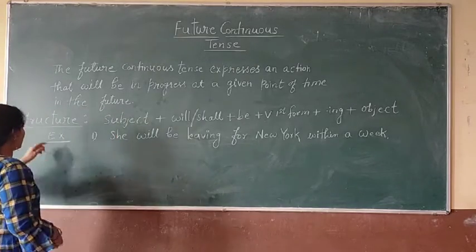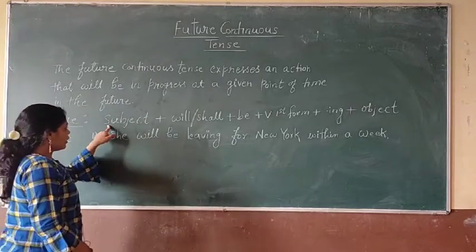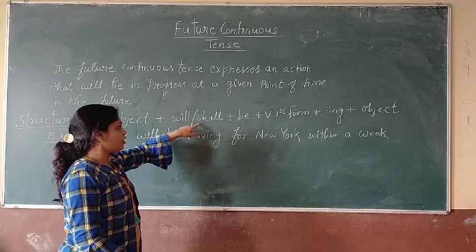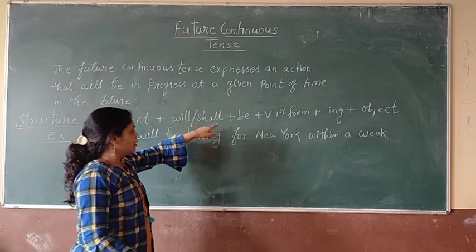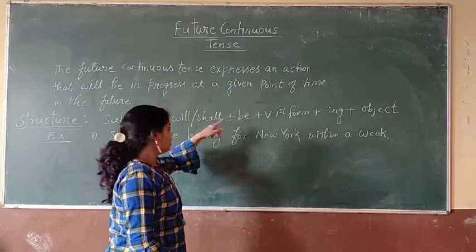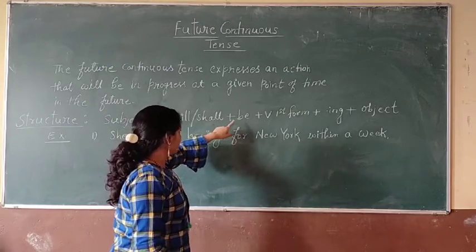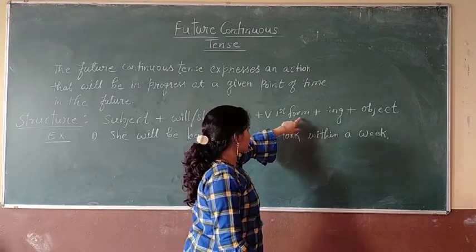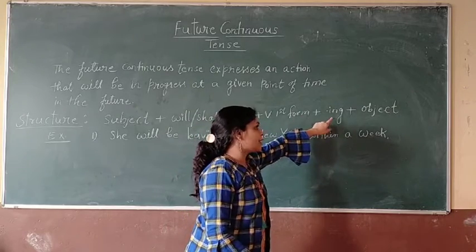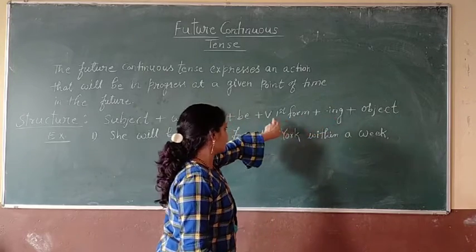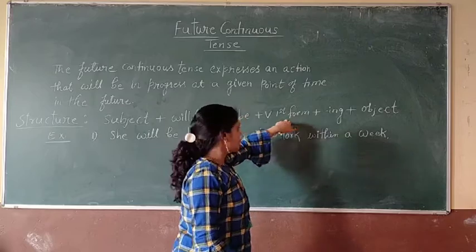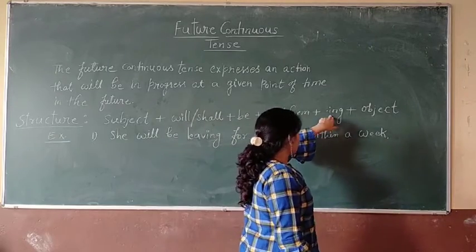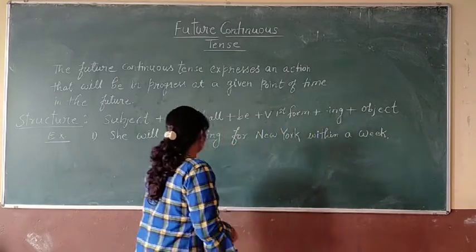Let's see the structure. First of all you have to use a subject, then will or shall, then be, then the verb with -ing added.